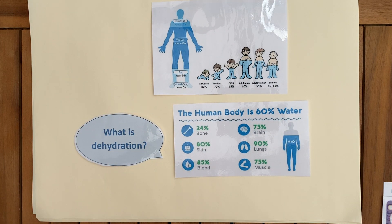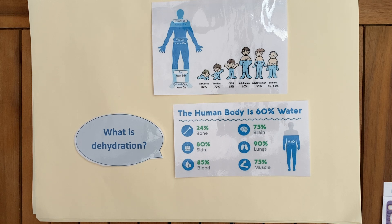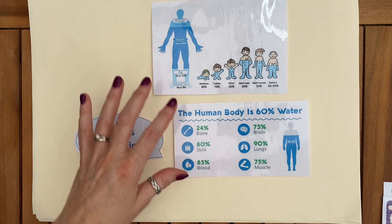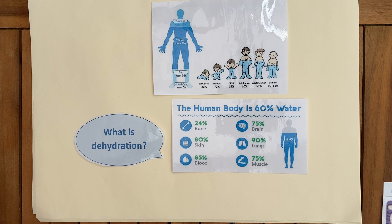There are important reasons why we need to remain hydrated. Our skin is 80 percent water, our blood is 85 percent water, our brain is 75 percent water and needs that fluid to function properly. The lungs are 90 percent water — a huge amount — and muscles are 75 percent. Different organs and body systems have varying amounts of water, which shows why we must stay hydrated.